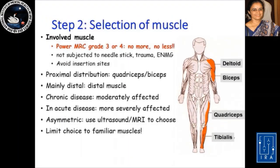Step 2, which is the selection of the muscle to be biopsied, is probably the most critical step. As a dictum, remember that the involved muscle should have a power of grade 3 or 4 — no more and no less. It should not have been subjected to a needle, trauma, or ENMG, and please avoid insertion sites.